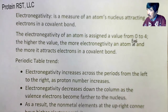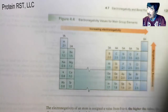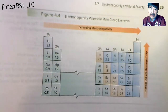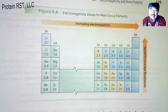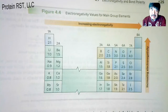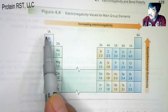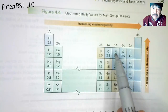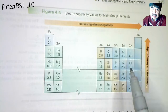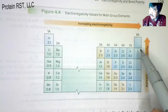Let's take a look at this table here. You can see this periodic table with the main groups: 1A, 2A, 3A, 4A, 5A, 6A, 7A, and 8A. This area is the transition metals. This is the noble gases.